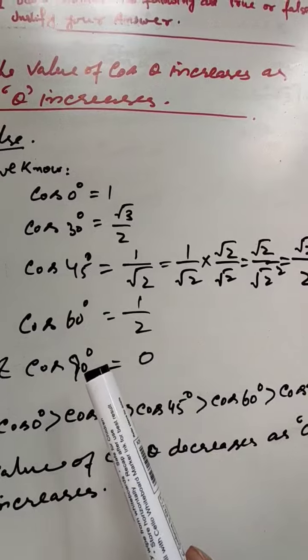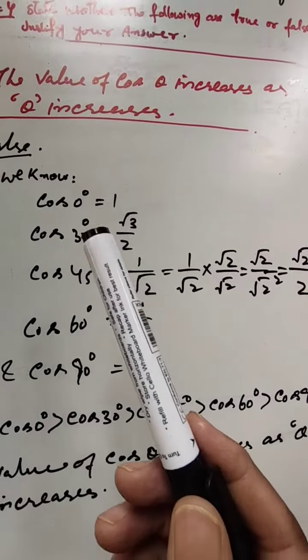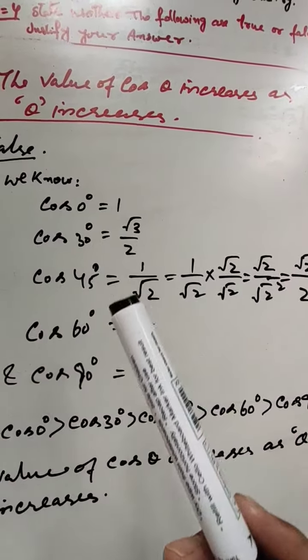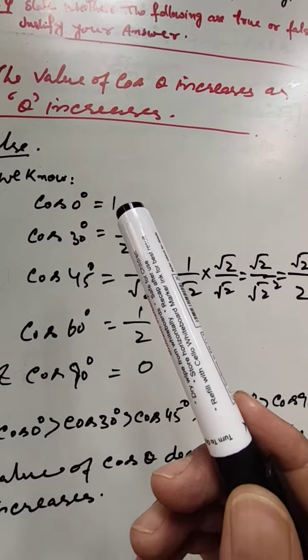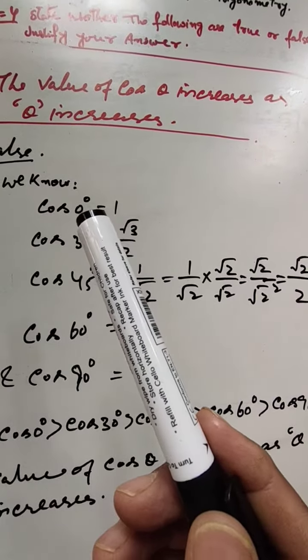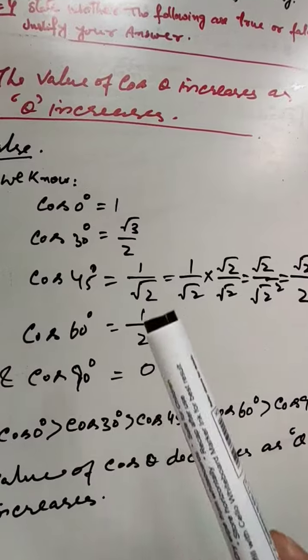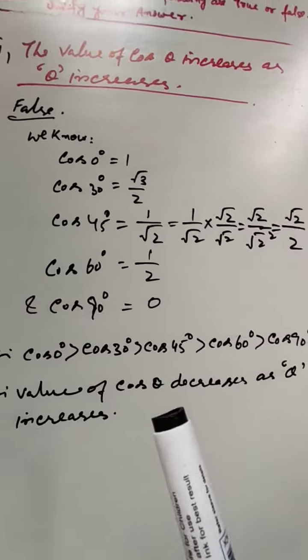cos 60° = 1/2, cos 90° = 0. So the value of cos θ is between 1 and 0, it is not greater than 1.